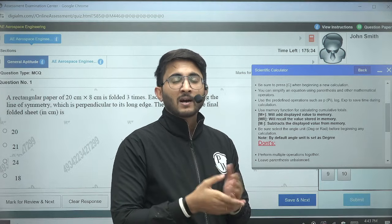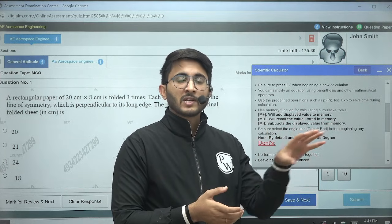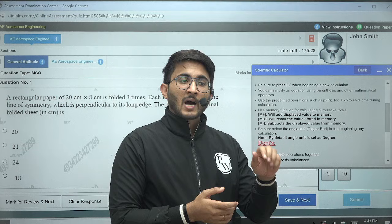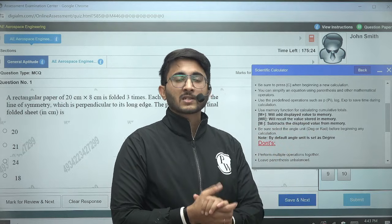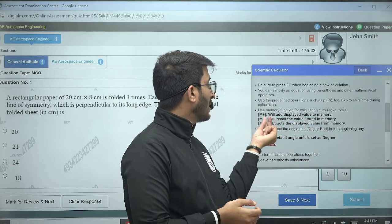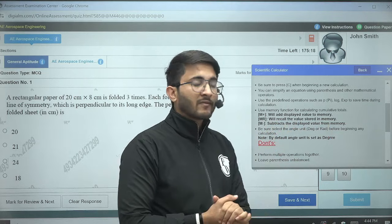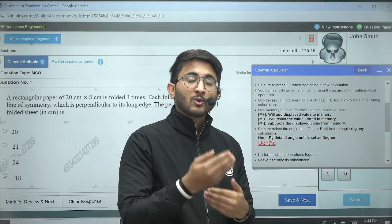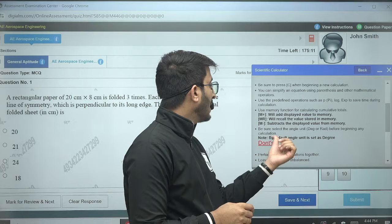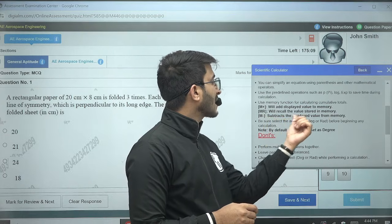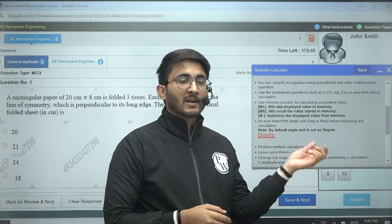Then you need to utilize the data again in the next step. Hope you guys know there are some specific questions where first we need to calculate some value, and after calculating this value we need to use the same value in further calculation. So that time you can use the M+ tab. And MR will recall the value stored in memory. So whenever you need to use the stored value again in calculation, then you need to press the MR tab. And M- will subtract the displayed value from the memory. It means whatever value you already saved, it will subtract that particular value.